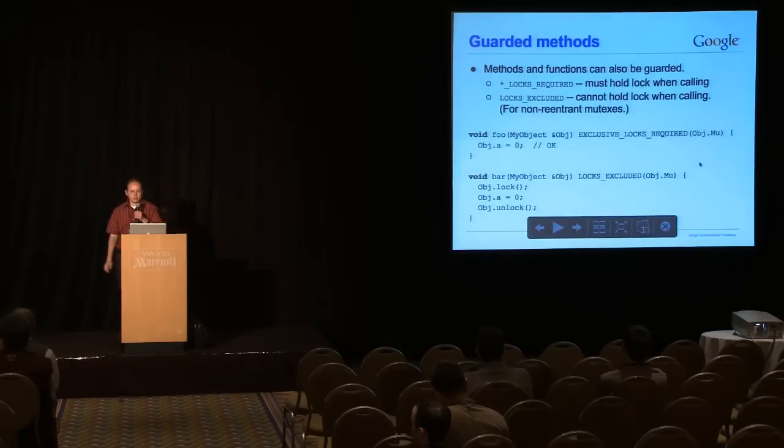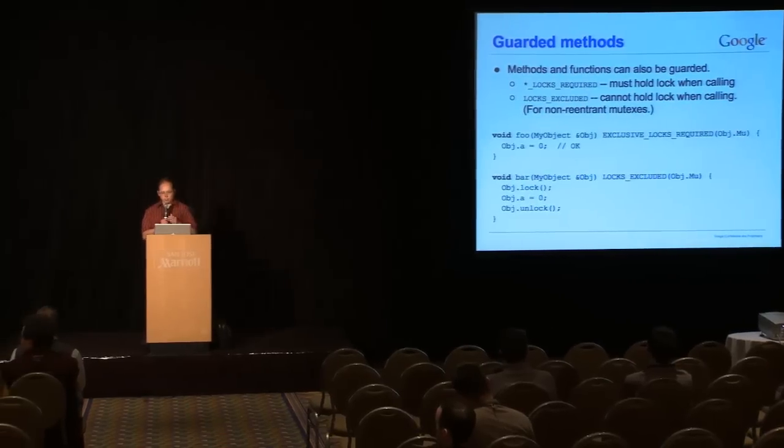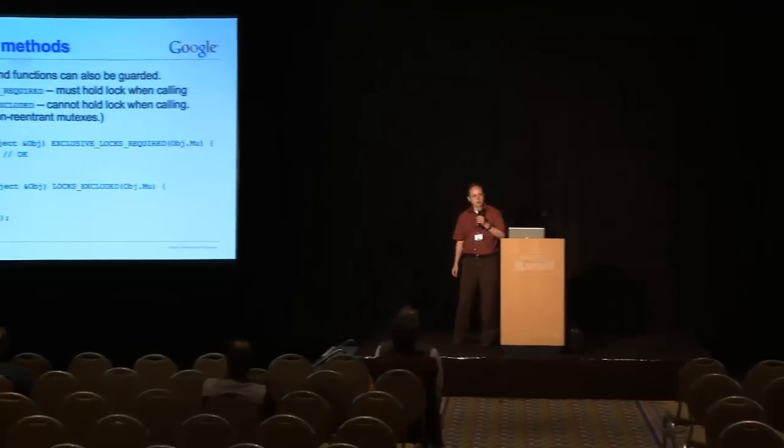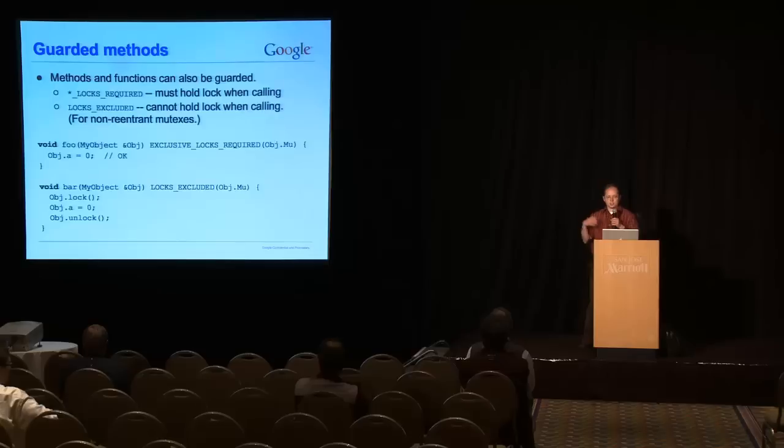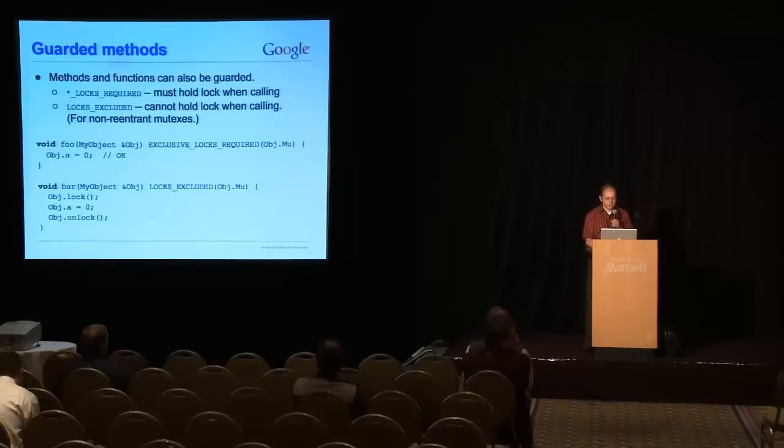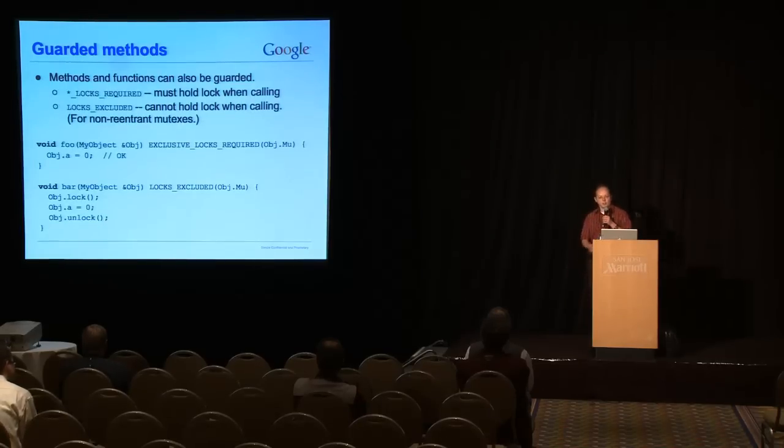You can also guard methods. Instead of using guarded by for methods, we decided to create, I guess for historical reasons, a whole new attribute, which is exclusive locks required. And also, since some mutexes are not re-entrant, in order to do deadlock prevention, we have the opposite, which is locks excluded. That means you can't hold the particular mutex. And notice, too, the lexical scoping here. We have a parameter to this function obj, and we can say exclusive locks required obj.mu. So, you can refer to function parameters within the arguments to the attribute.